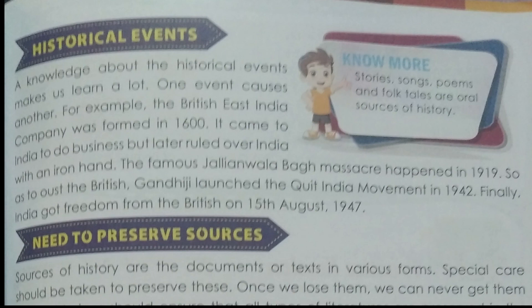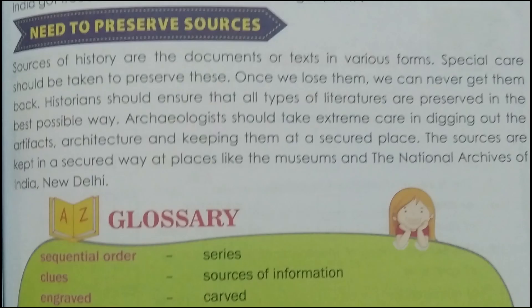A knowledge about historical events makes us learn a lot — one event causes another. For example, the British East India Company was formed in 1600. It came to India to do business but later ruled over India with an iron hand. The famous Jallianwala Bagh massacre happened in 1919. As a result, Gandhiji launched the Quit India Movement in 1942. Finally, India got freedom from the British on 15th August 1947.